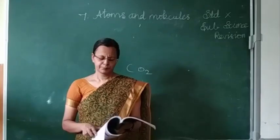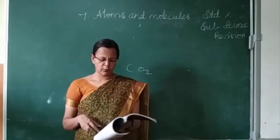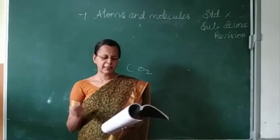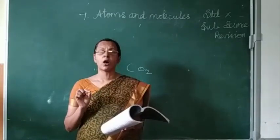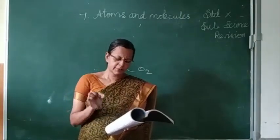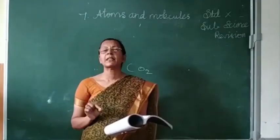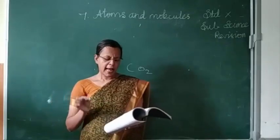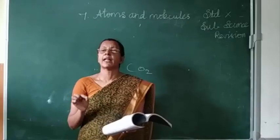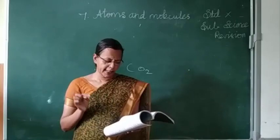Next, fill in the blanks. There are 10 fill-in-the-blank questions. First: Atoms of different elements having the same mass number but different atomic numbers are called isobars. Second: Atoms of different elements having the same number of neutrons are called isotones.